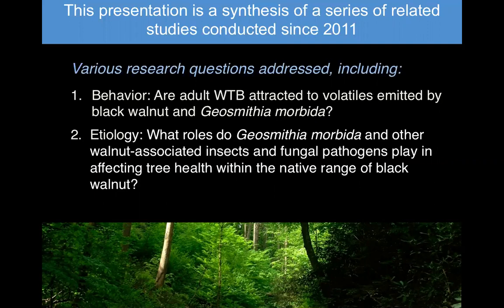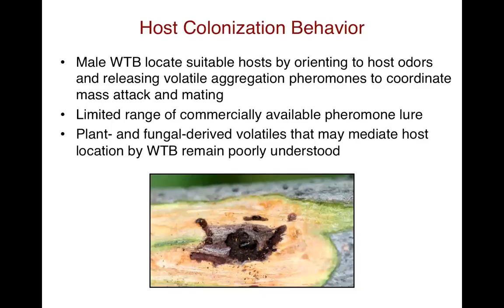Our research thrusts are two-pronged. The first question surrounds the behavior of the beetle — we're asking about the extent to which the walnut twig beetle is attracted to volatiles emitted by black walnut and also by the fungal pathogen. The second question is the etiology and progression of this disease — what roles Geosmithia morbida and other walnut-associated insects and fungal pathogens might play in affecting tree health within the native range of black walnut.